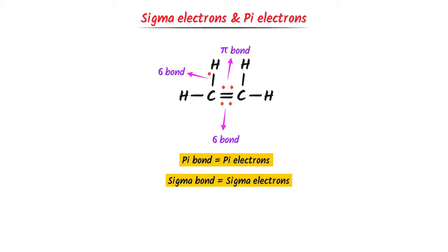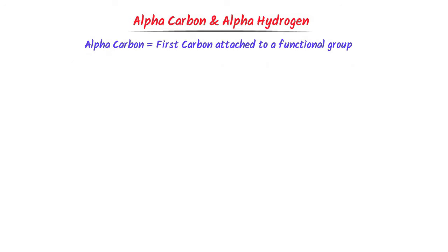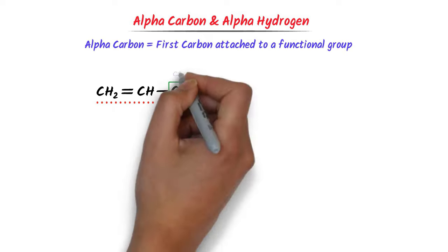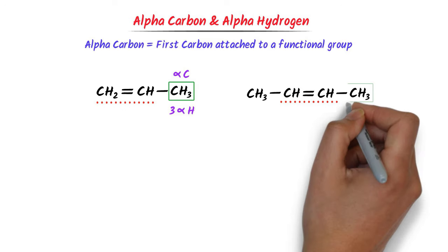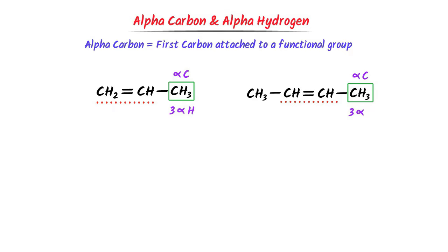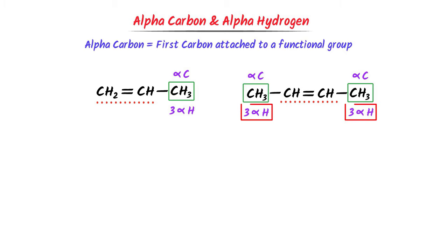The second important concept you must learn is alpha carbon and alpha hydrogen. We define alpha carbon as the first carbon atom attached to a functional group. For example, consider this organic compound where the functional group is alkene. The first carbon attached to the functional group is the alpha carbon, and the three hydrogens linked to it are alpha hydrogens. In another compound with alkene, both the right-hand and left-hand carbons are alpha carbons, giving a total of six alpha hydrogens.